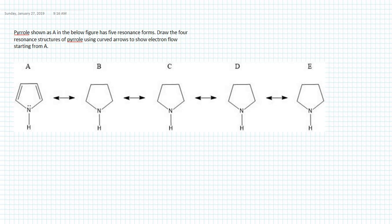In this tutorial we are going to solve a question related to drawing resonance forms. The question asks: pyrrole, shown as A in the figure below, has five resonance forms. Draw the four remaining resonance structures of pyrrole using curved arrows to show electron flow, starting from A.